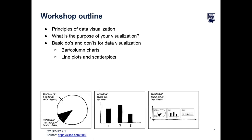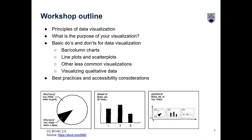We'll talk about a few different types: bar and column charts, line plots and scatter plots, some less common visualizations, and a little bit about how to visualize qualitative data — something we've heard from past participants that they'd like to know more about. We'll also discuss best practices overall for visualizing data and accessibility considerations. We'll end with a time for questions and a list of potential resources. We will share the slides afterwards, which will include references and links for more detailed information on each topic.